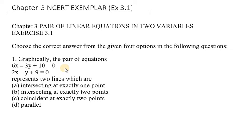Question number one: graphically, the pair of equations 6x − 3y + 10 = 0 and 2x − y + 9 = 0 represents two lines which are — intersecting at exactly one point, intersecting at exactly two points, coincident, or parallel? To solve this, I will find the ratios a1/a2, b1/b2, and c1/c2 and check whether they are equal or not.